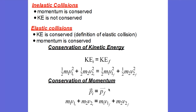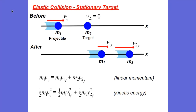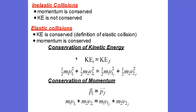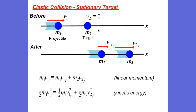Remember, momentum is conserved in all collisions. Here we're going to analyze an elastic collision between a moving ball and a stationary ball. We'll call the incoming ball the projectile and the stationary ball the target. If we look at our equations for conservation of kinetic energy and conservation of momentum, they look quite long. But if we have a stationary target, the equation simplifies because V2 initial is zero.